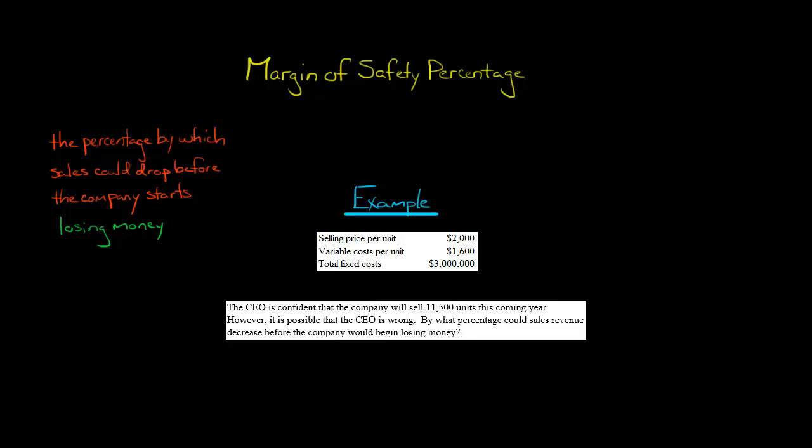In this video, we're going to do an example problem of how to calculate the margin of safety percentage. If you don't remember, the margin of safety percentage is the percentage by which the company's sales revenue could decrease before the company starts losing money.